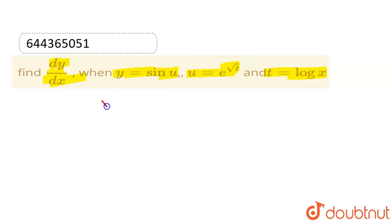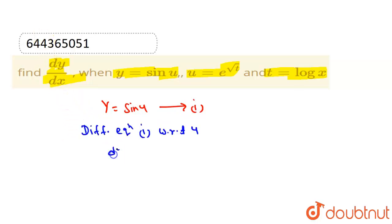Now here y is equal to sin u. Suppose this is our equation number first. Now differentiate equation first with respect to u. So dy upon du is equal to differentiation of sin u with respect to u, and we know that differentiation of sin u with respect to u is cos u.